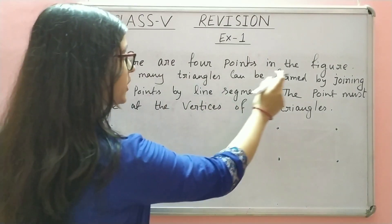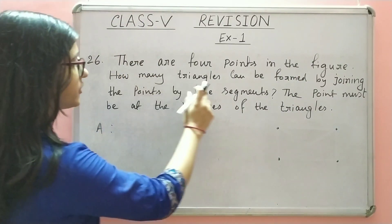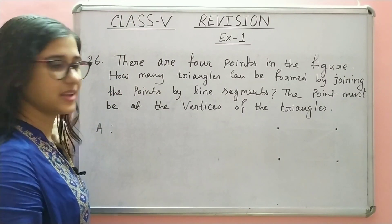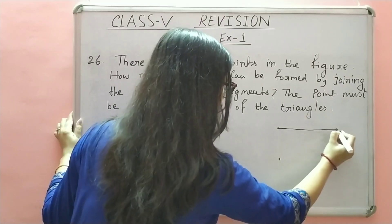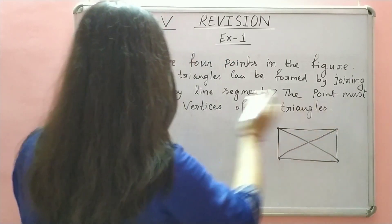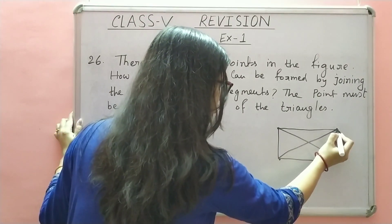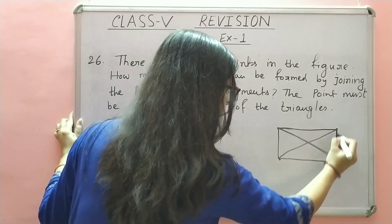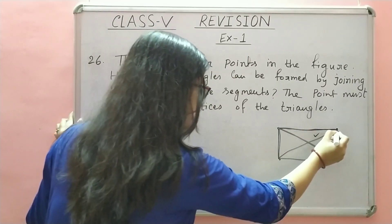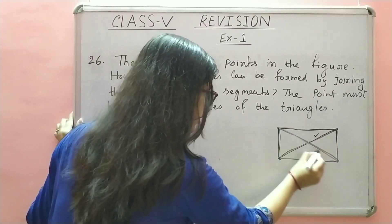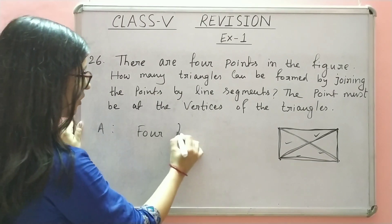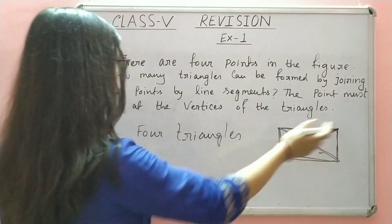Question number 26: There are 4 points in the figure. Yahan par 4 points diya hua hai. How many triangles can be formed by joining the points by line segments? Toh yeh jo point hai, inhe hume join karna hai, aur phir hume dekhna hai kitna triangles aata hai. Toh first hum join kar denge. The point must be at the vertices of the triangles. Yeh 1, 2, 3, 4 triangles ban rahe hain. 4 triangles can be formed by joining the points by line segments.